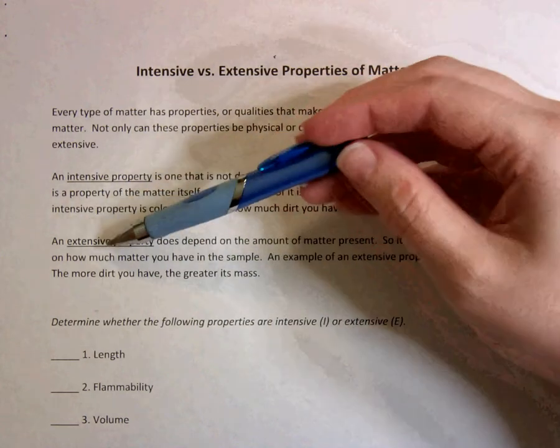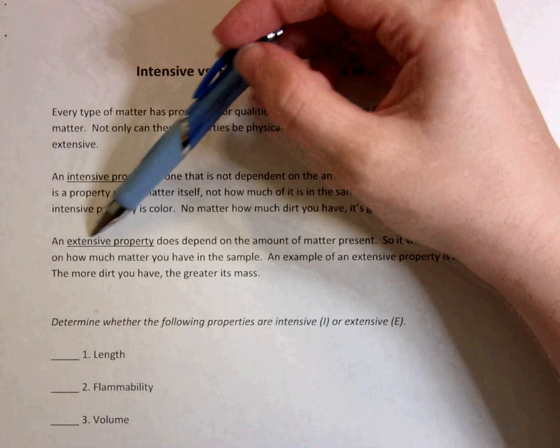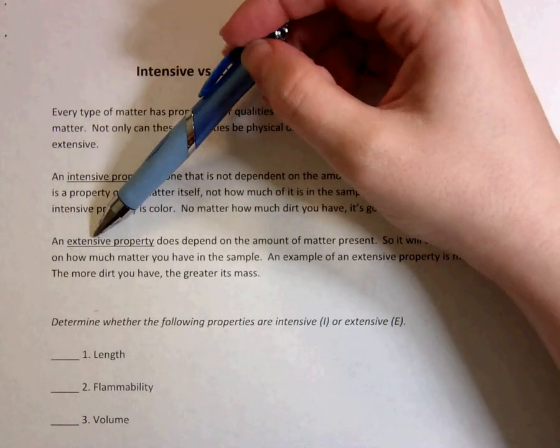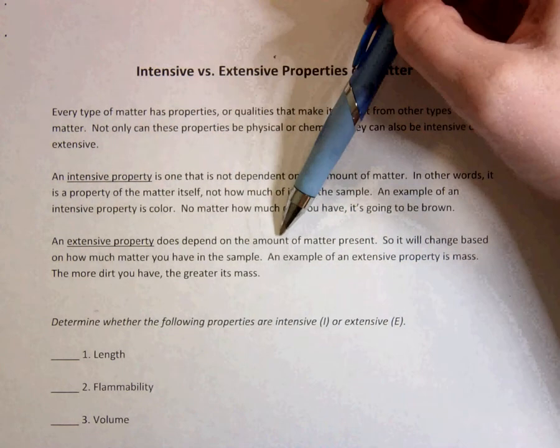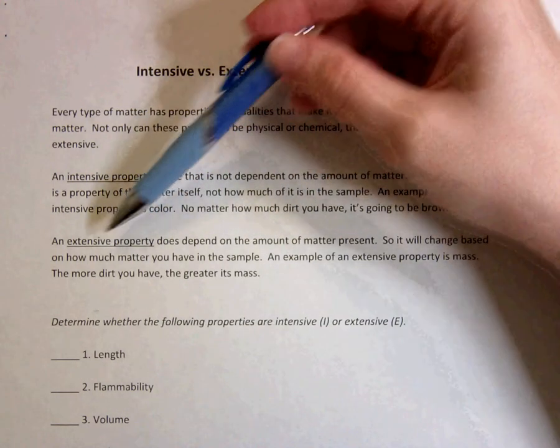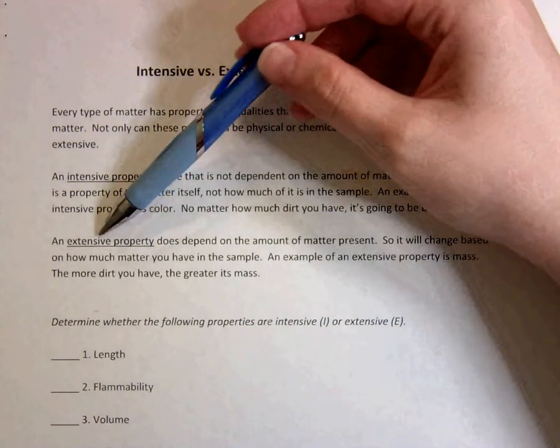An extensive property depends on the extent of matter that you have. The extent means the amount. So if you have a lot of something, it will change its extensive property versus if you have just a little bit of something.